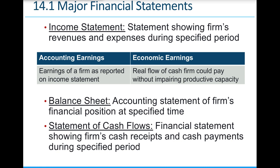There are two types of earnings. Accounting earnings are what the firm reports on the income statement following a particular set of guidelines to develop net profit — but net profit isn't exactly the money in the bank; that would be the cash flow retained. Economic earnings are the real flow of cash a firm could pay without impairing productive capacity. Think of accounting earnings as a close number, but economic earnings reflect reality.